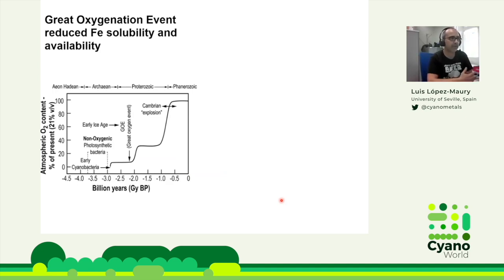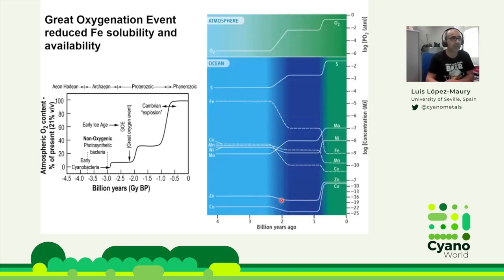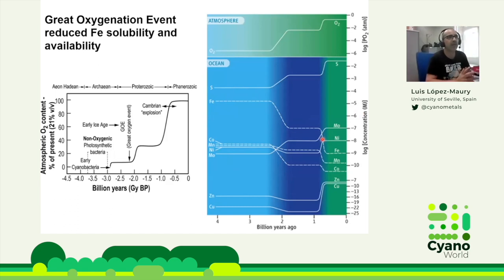When cyanobacteria expanded and generated the great oxygenation event, and later with the appearance of algae and plants, oxygen concentration raised. That caused a big change in the availability of different metals: iron decreased, while some others increased in availability. This changed how all organisms could access metals and how they have been used in evolution.